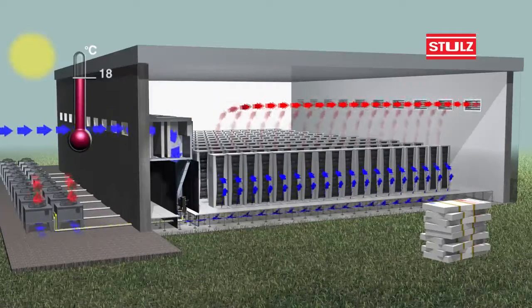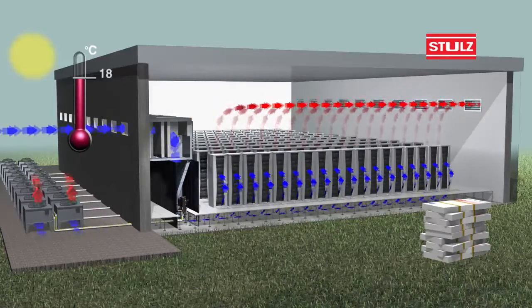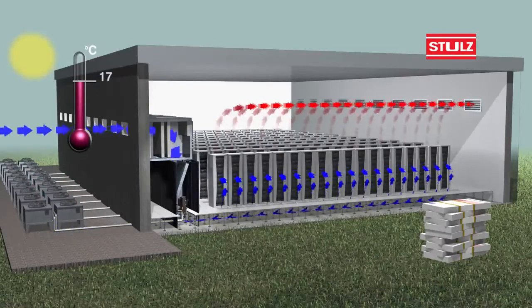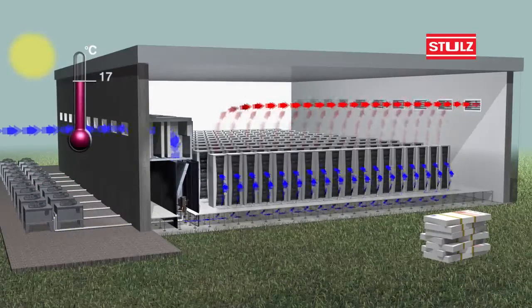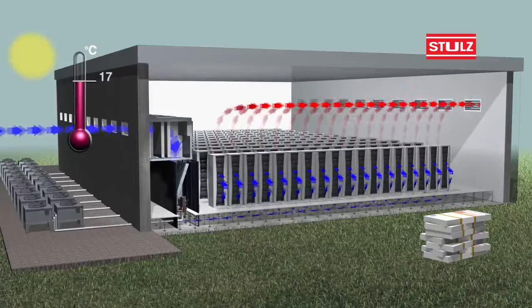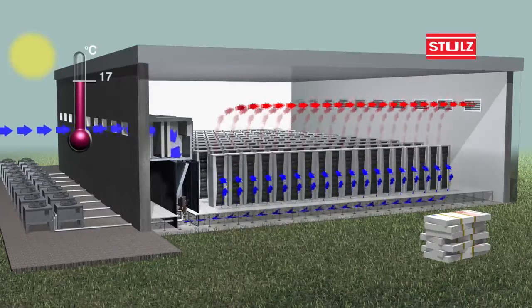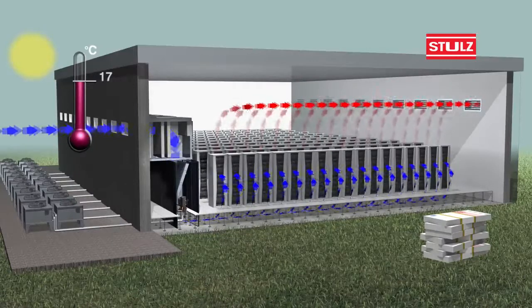When outside temperatures are below 18 degrees Celsius, our direct free cooling uses 100% filtered outside air to cool the data center, making compressor operation unnecessary.